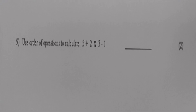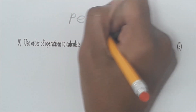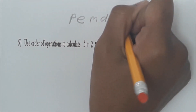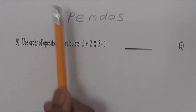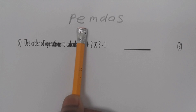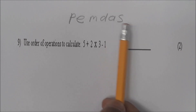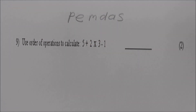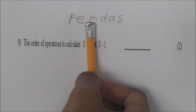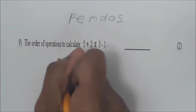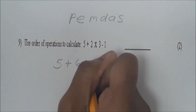Read number 9. Use order of operations to calculate 5 plus 2 times 3 minus 1. I'm going to use PEMDAS. What does PEMDAS mean? P stands for parentheses, E for exponents, M for multiplication, D for divide, A for adding, and S for subtract. That's the order of operations. I'm going to start with 2 times 3, which gives 5 plus 6 minus 1.